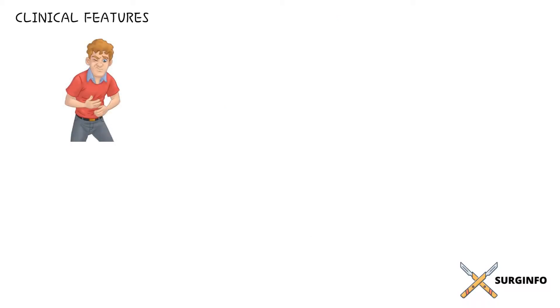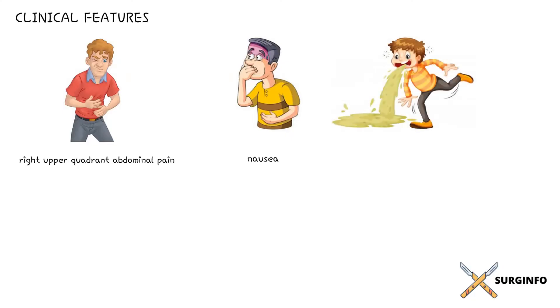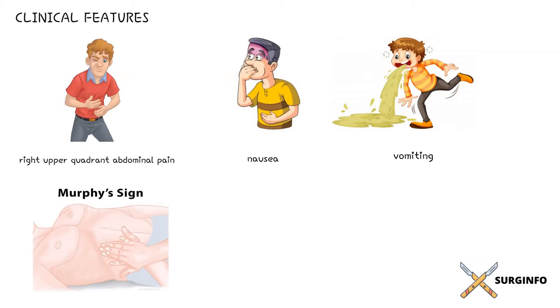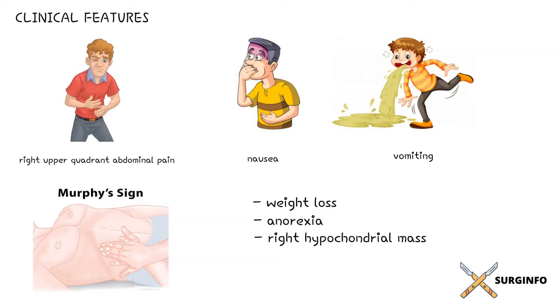Presenting symptoms include acute onset of right upper quadrant abdominal pain (85%), nausea (26%), and vomiting (22%). On physical examination, a positive Murphy's sign is present in approximately 53% of patients and can mimic acute cholecystitis. Other patients may have more chronic symptoms, including weight loss (9%) and anorexia (18%). A right hypochondrial mass is palpable in approximately 10% of patients, mimicking carcinoma of the gallbladder.